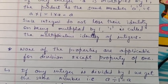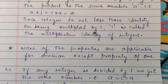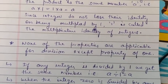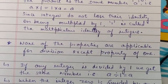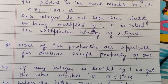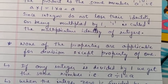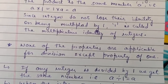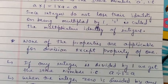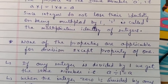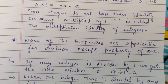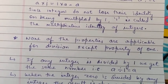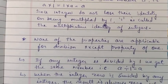An important point: none of the properties — such as commutative or associative — are applicable for division, except the property of one. The property of one is applicable for division, as we have seen. There is generally no property applicable for division.